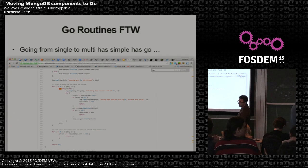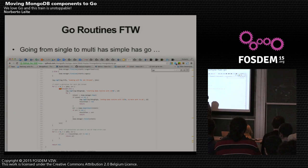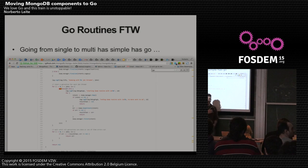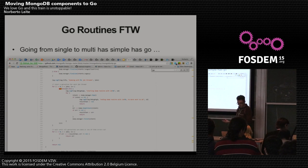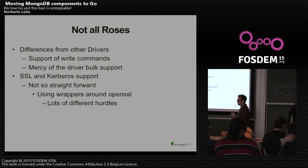And obviously, goroutines. Making a function go multi-threaded is just calling it as a goroutine — and that's it. Whoever invented goroutines needs a kiss every day because it makes life so much easier.